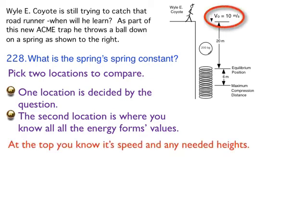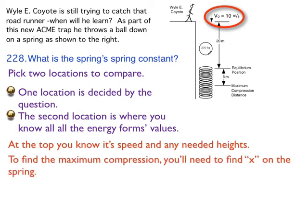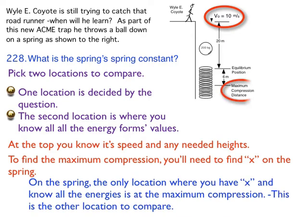At the top, you know the speed and any needed heights. So up there where it's 10 meters per second. Now if I'm going to find the maximum compression, I'm going to find it somewhere on the spring. And I know in this problem, because of what's given, it's going to be at the very bottom at maximum compression, because that's where the velocity is zero. It's the lowest point. The height is zero. So all the energy is stored in the spring. And that's what I'm after. So that's perfect. That's what I'm going to use.